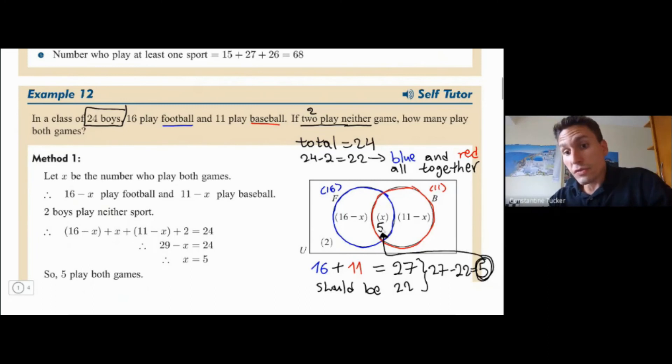And now that we found this five, we can work our way backwards. We can find from this five, how many people play football here on the left, and we can find how many people play baseball here on the right.